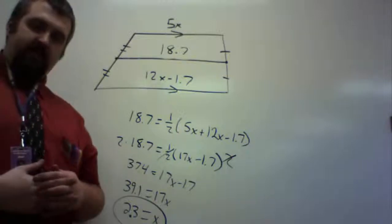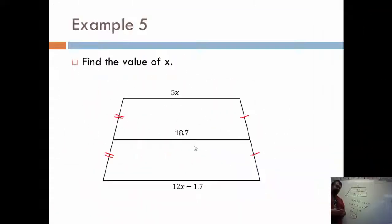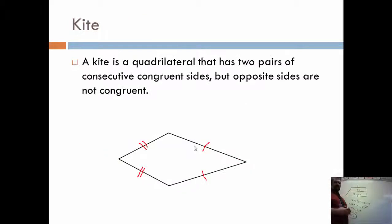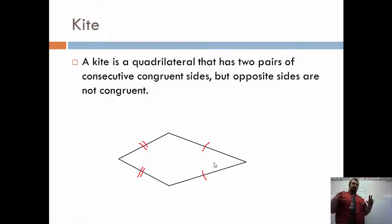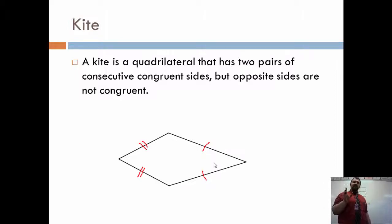That's it for trapezoids in this section. We're also going to take a look at a shape called a kite. A kite is a quadrilateral that has two pairs of consecutive congruent sides, but not opposite sides being congruent. Basically, it's not a parallelogram and it's not a trapezoid. The pairs next to each other will be congruent, but not the pairs across. A kite can never be a rhombus — throw that idea out.